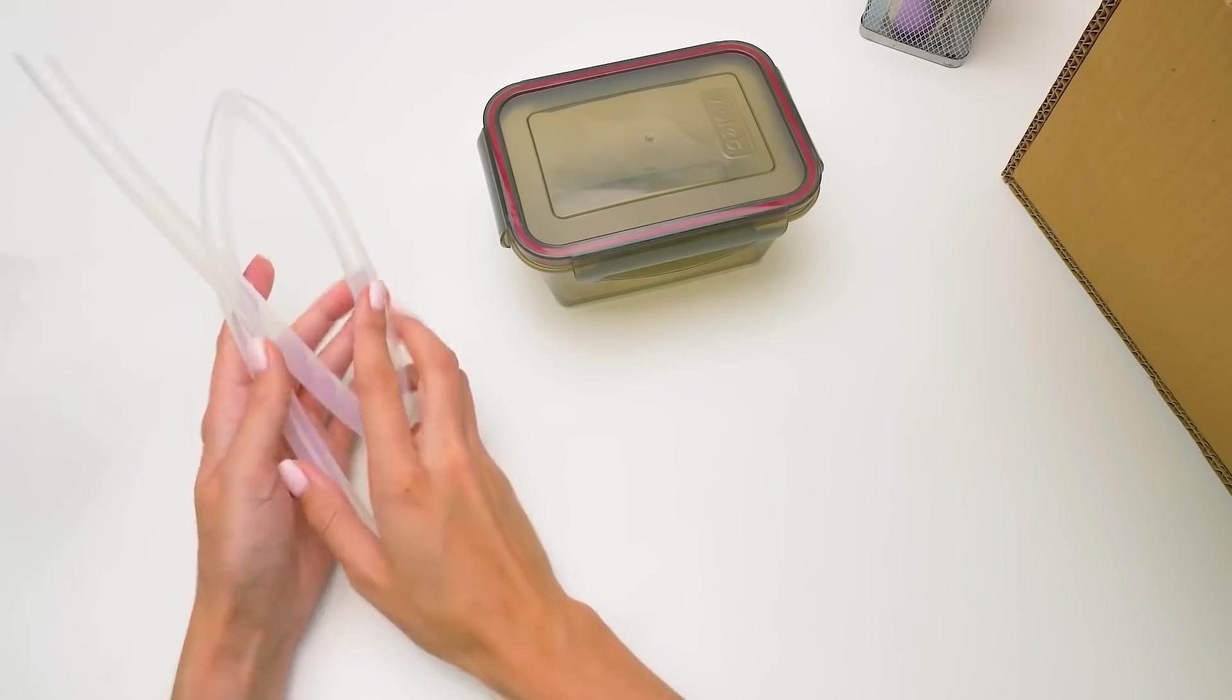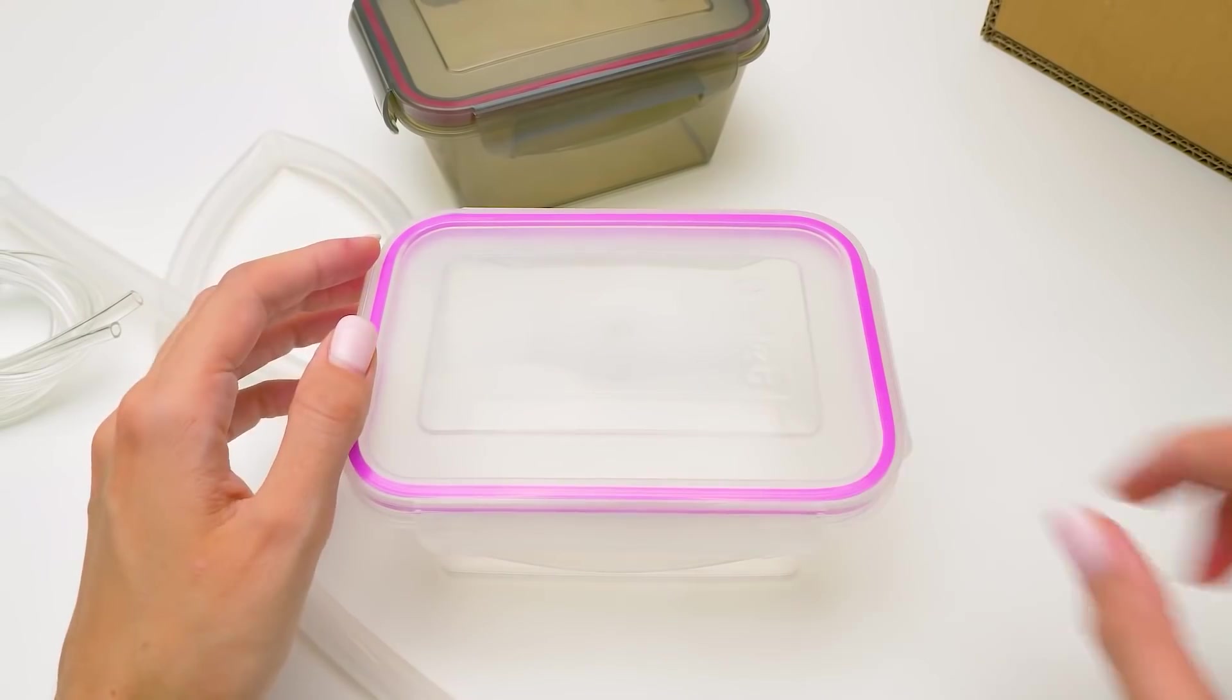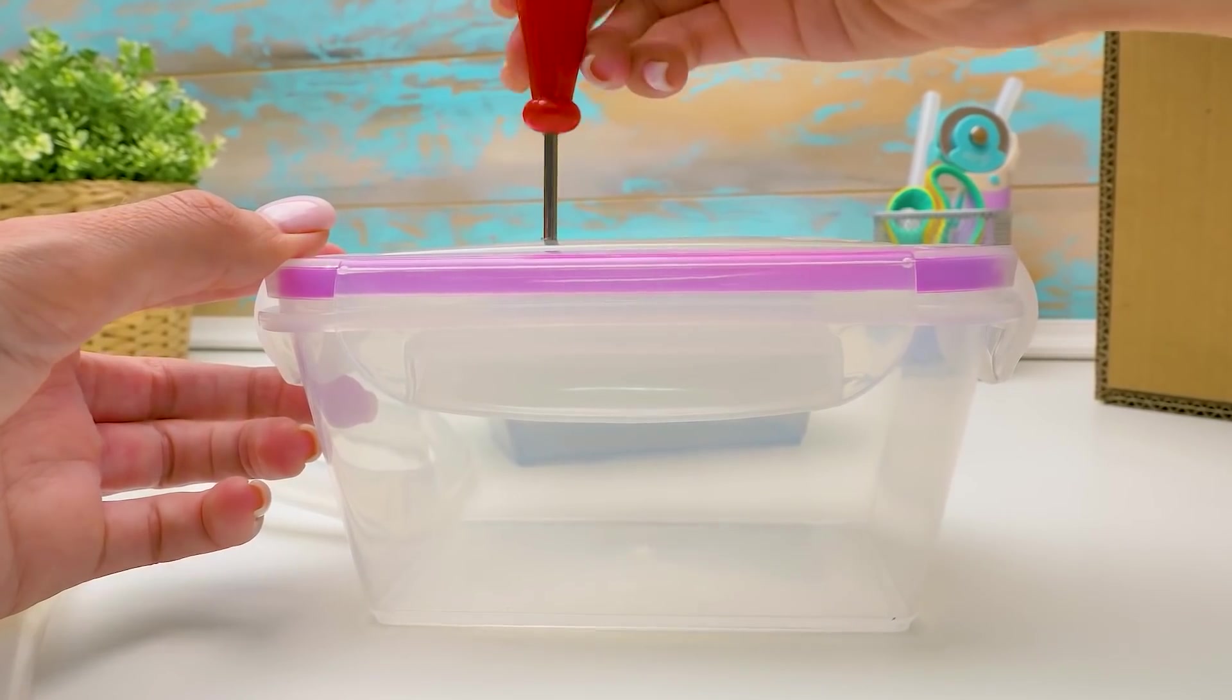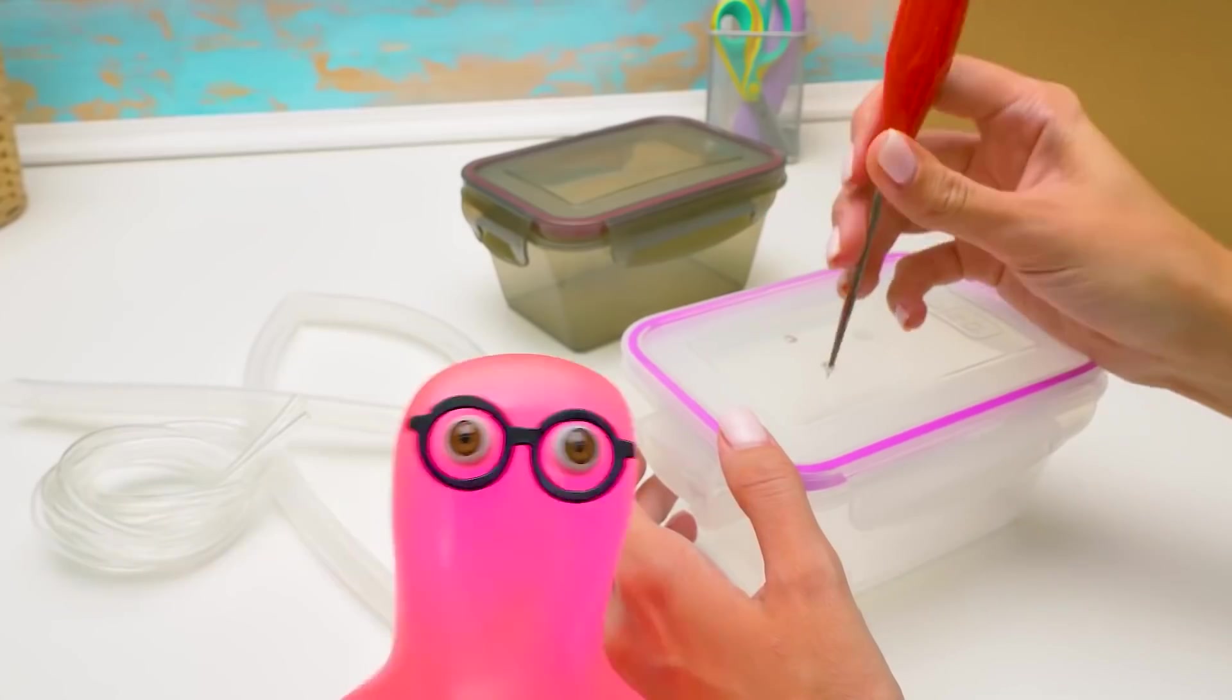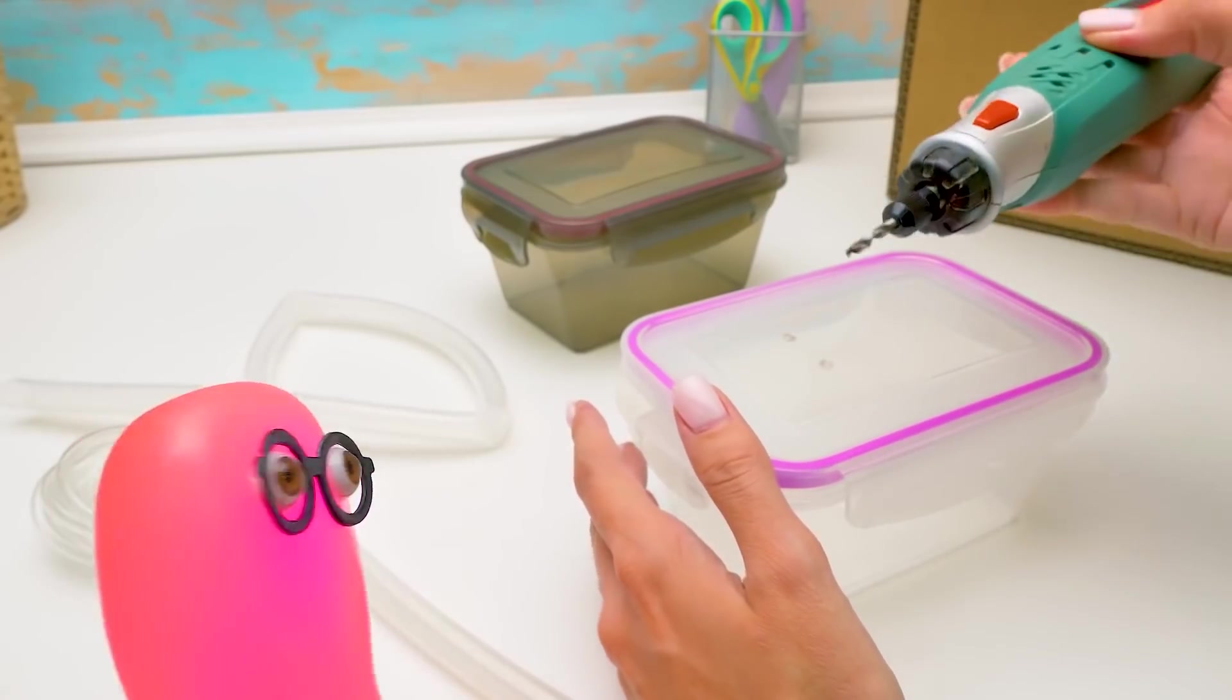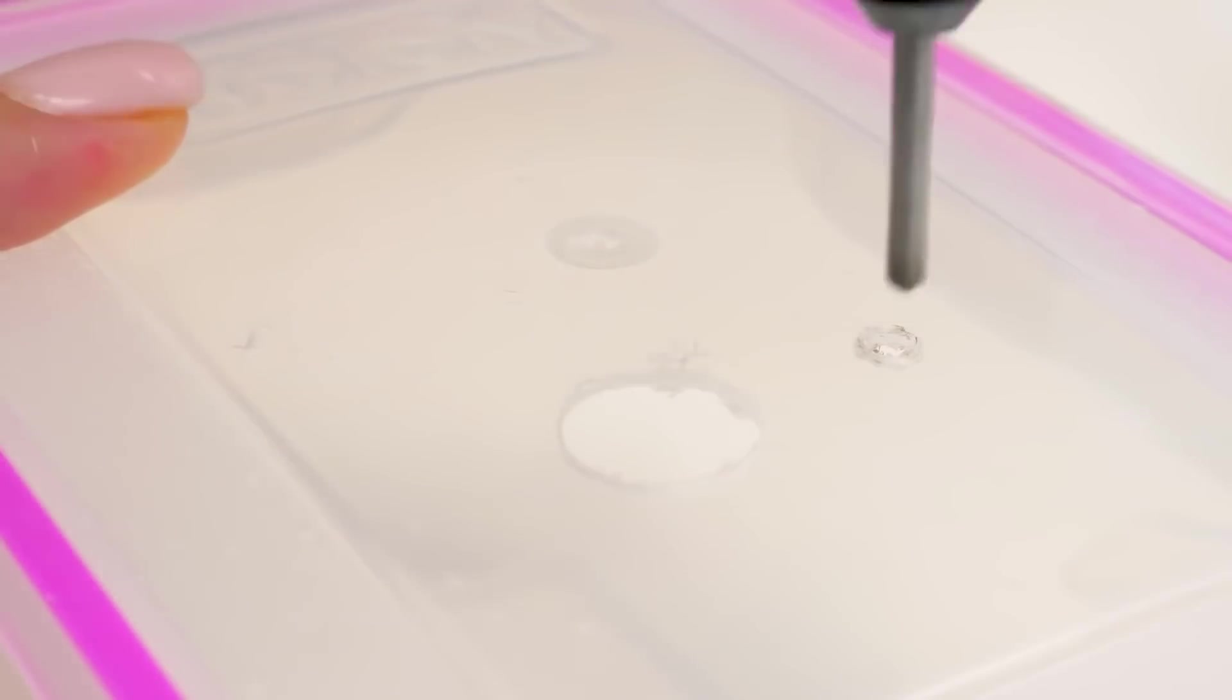Time to make holes in the container lid. The hole's diameter should be smaller than the tubes. To make everything airtight? Uh-huh. Otherwise the machine won't work properly. Be very careful with the drill, or ask an adult to do it for you guys.